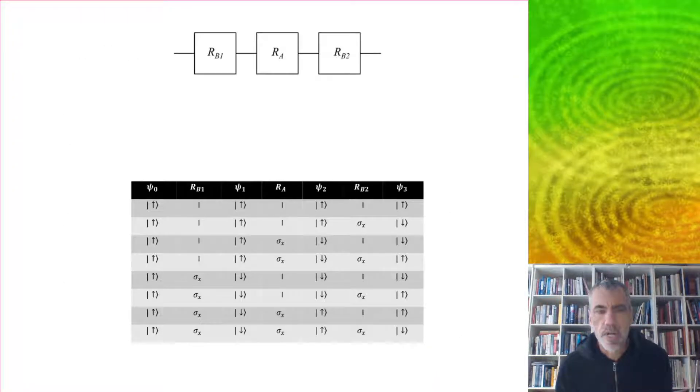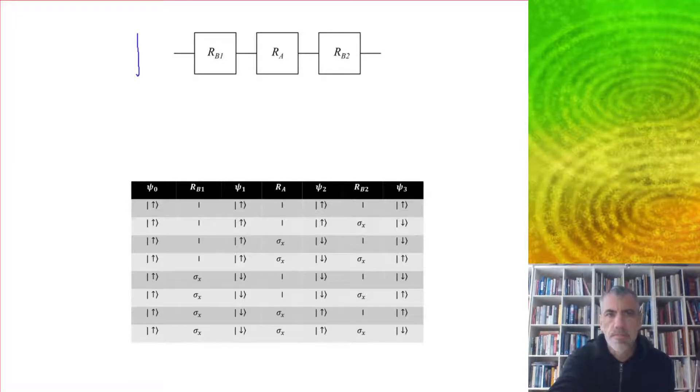A quantum circuit for this game would look like this, where we've got three different moves. Player A positions the coin in the heads-up state, and then player B gets to make a move, and player A gets to make a move, and player B finally gets to make a move, and then we measure the outcome here and see whether it's heads-up or tails-up.